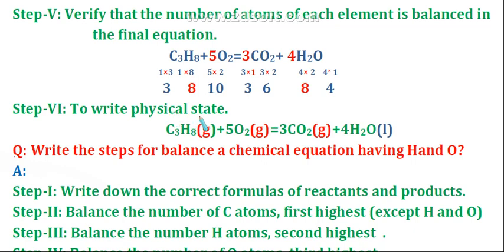Step six: write the physical state so that the chemical equation will be more informative. C3H8 is in gaseous state, oxygen is also in gaseous state, carbon dioxide is in gaseous state, and water is in liquid state. The complete balanced reaction is: C3H8 (g) plus 5O2 (g) equals 3CO2 (g) plus 4H2O (l).